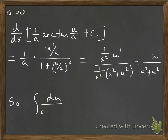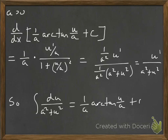So du over (A squared plus U squared) has the antiderivative 1 over A times arc tan of U over A plus the constant of integration. That's the form we're looking for. There's one other formula to look at, and it involves the arc secant.